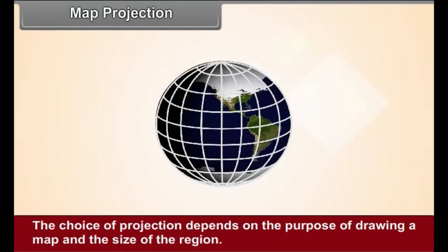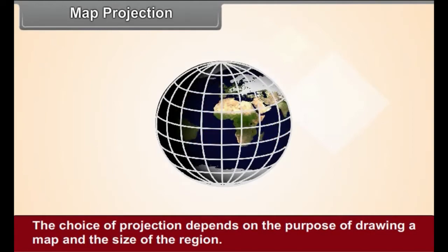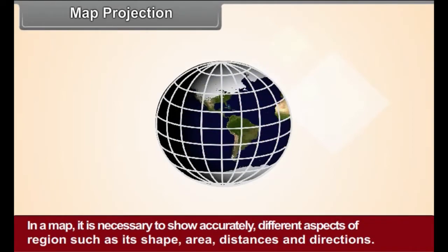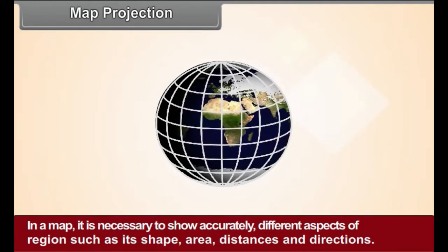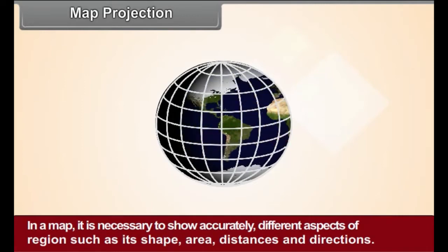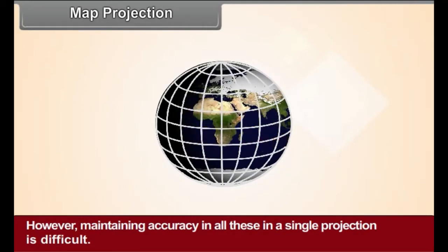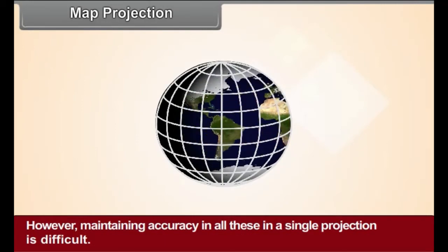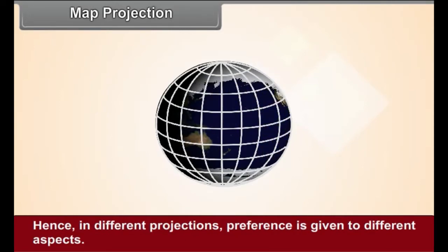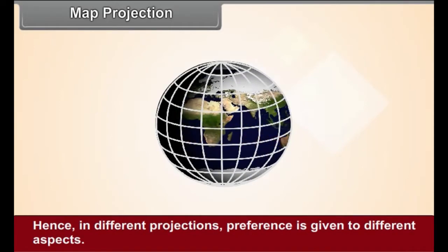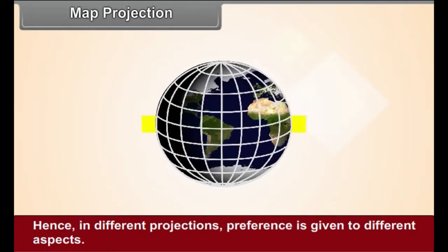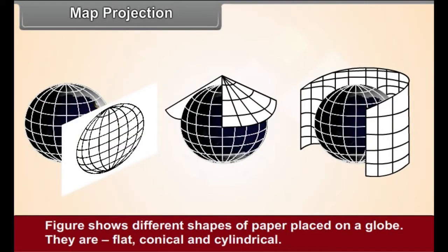The choice of a projection depends on the purpose of drawing a map and the size of the region. In a map, it is necessary to show accurately different aspects of a region such as its shape, area, distances and directions. However, maintaining accuracy in all these in a single projection is difficult. Hence, in different projections, preference is given to different aspects.